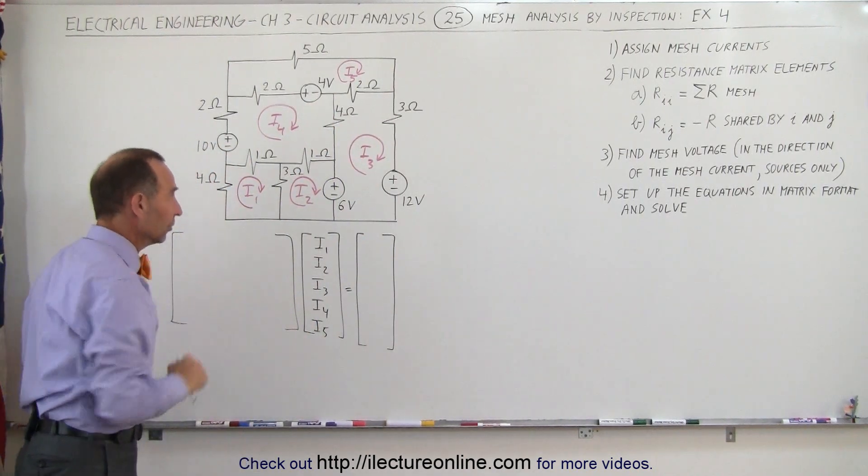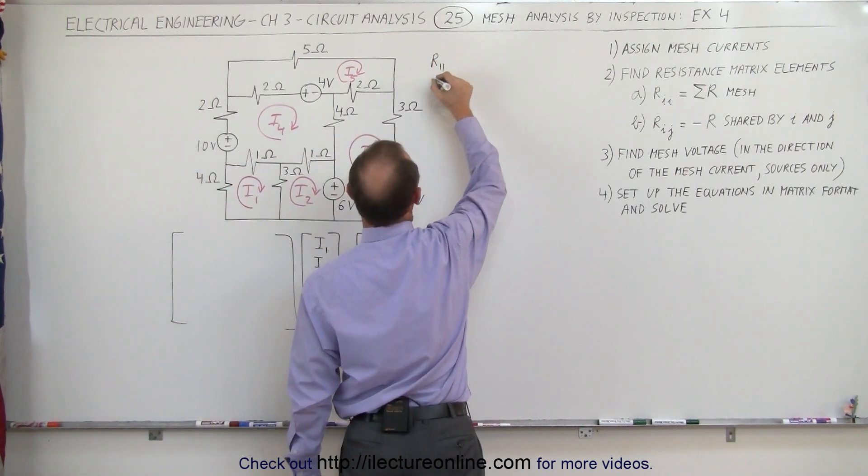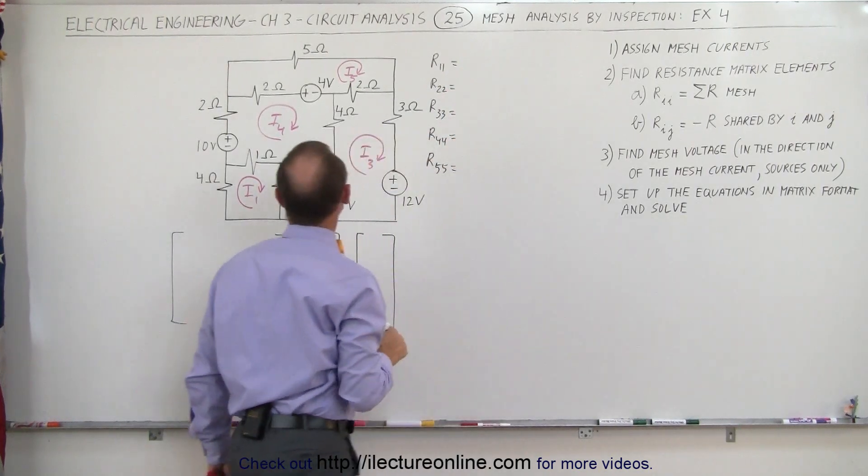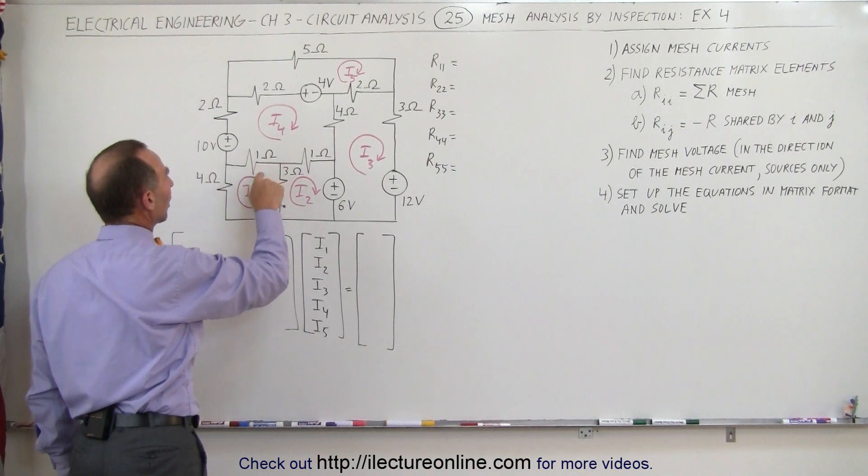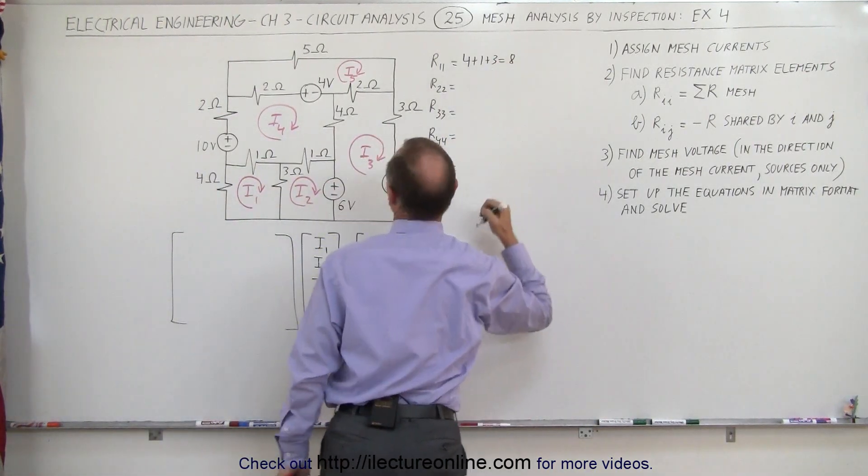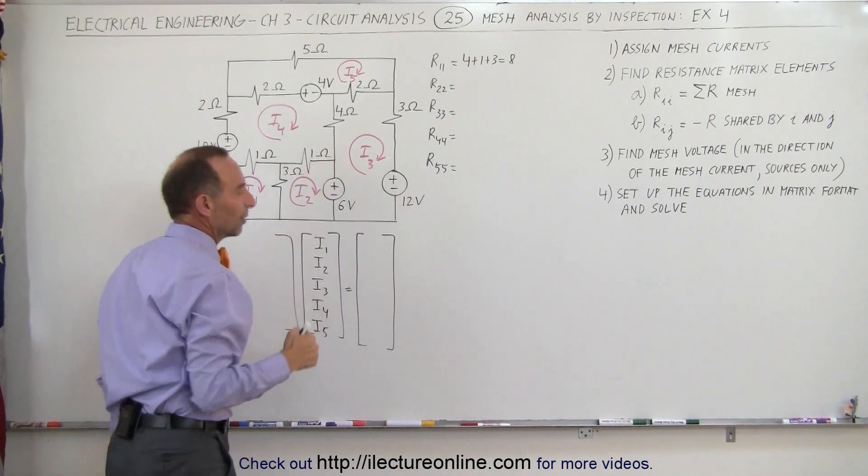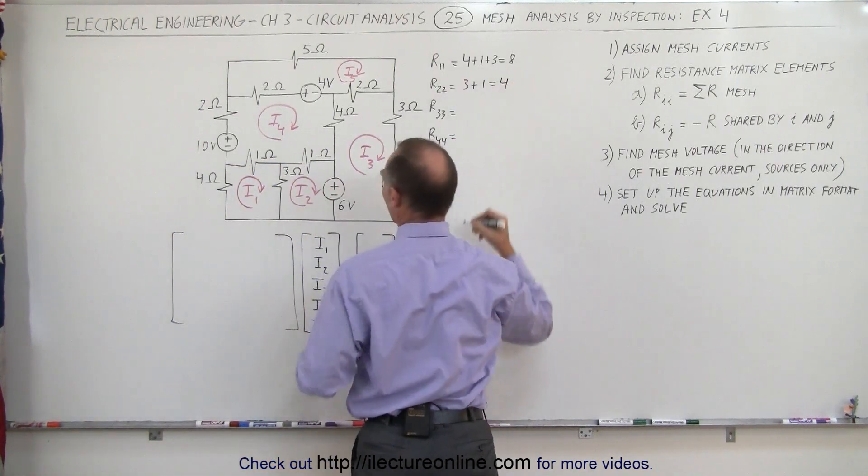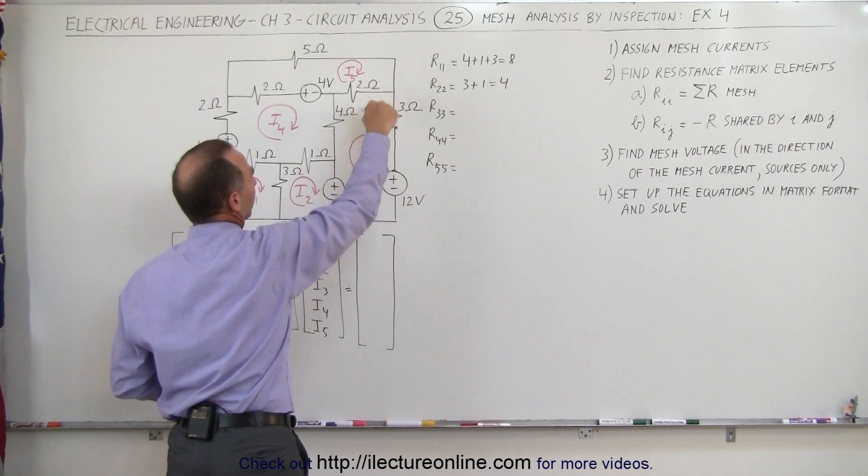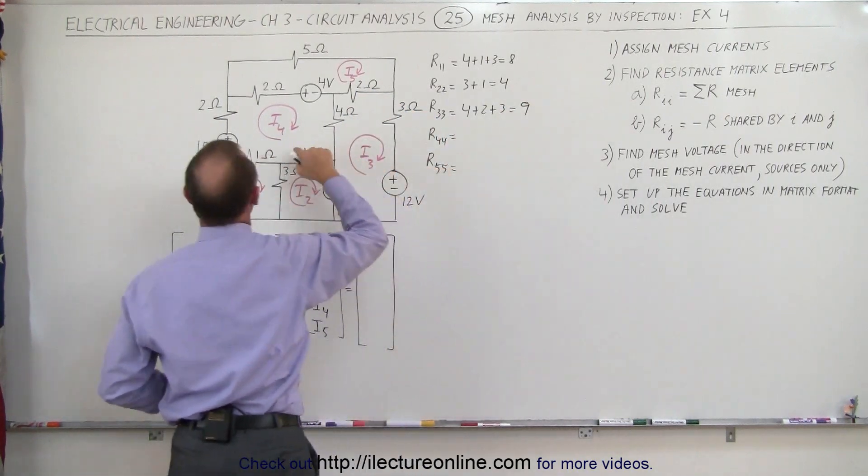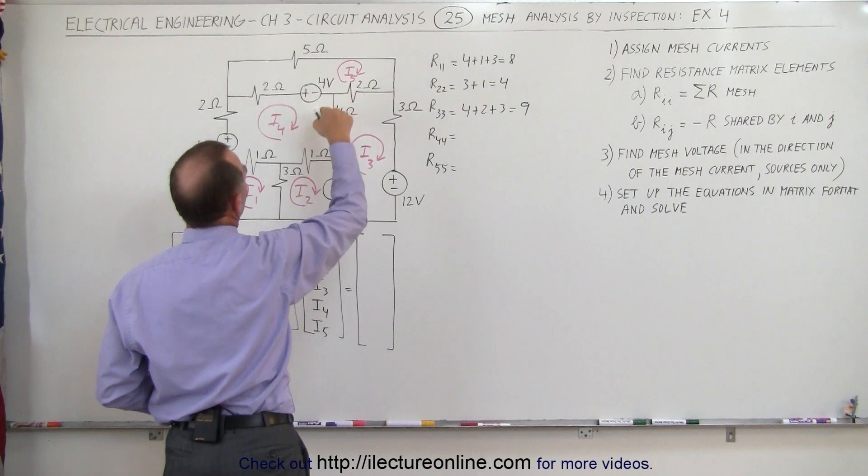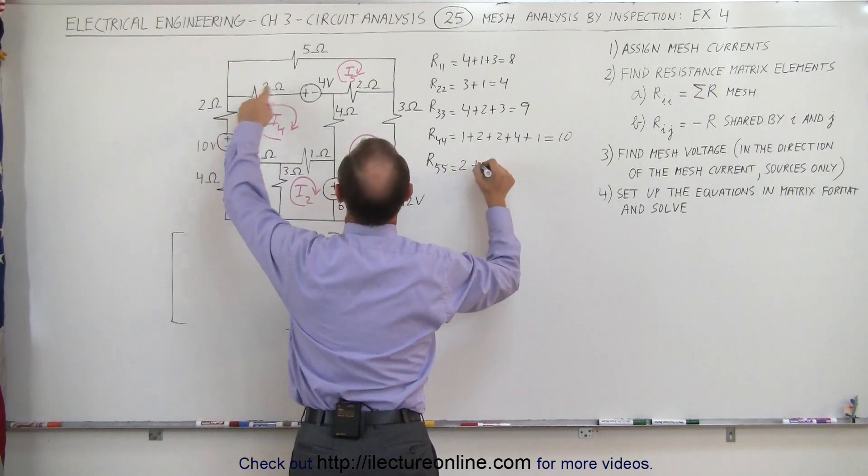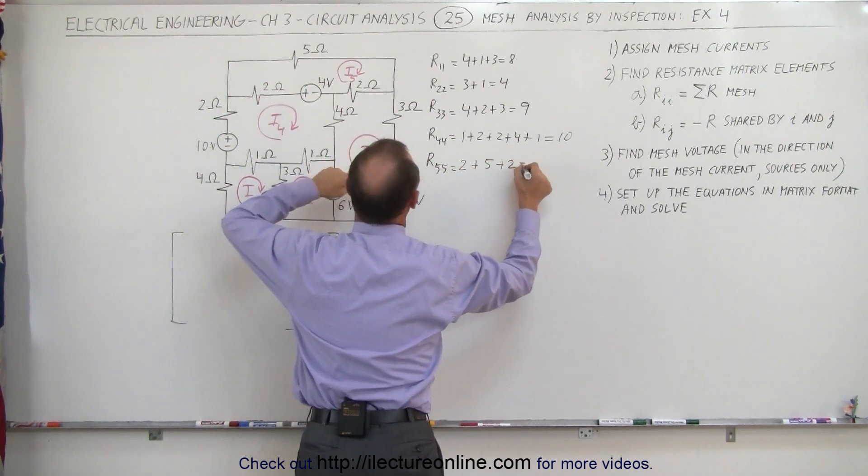First we want to find the diagonal elements: R11, R22, R33, R44, and R55, which means we're going to add up all the resistances in each of the five loops. For the first loop, notice we have 4 plus 1 plus 3, that's equal to 8. For the second loop, we have 3 plus 1, which is 4. For the third loop, notice we have 4 plus 2 plus 3, which is 9. For the fourth loop, 1 plus 2 plus 2 plus 4 plus 1. And finally the fifth loop, we have 2 plus 5 plus 2, which is 9.